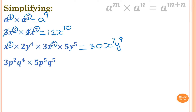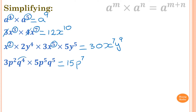So 3p squared times x to the power of 5. We write 15 down first. Then p squared times x to the power of 5. And q to the power of 4 times q to the power of 5: 4 plus 5 is 9, so q to the power of 9.